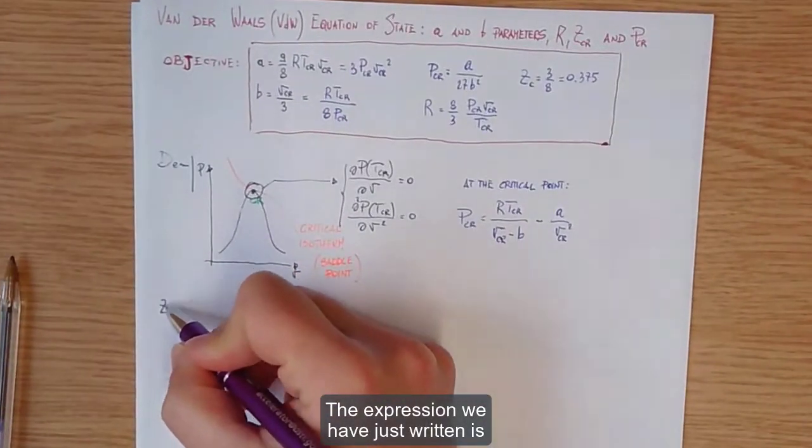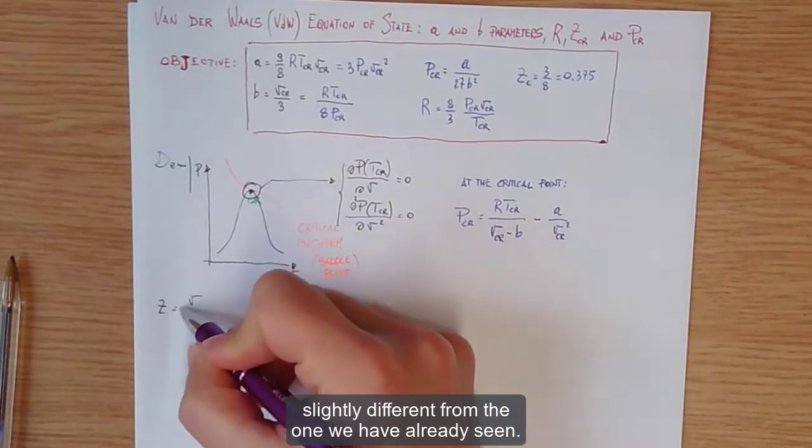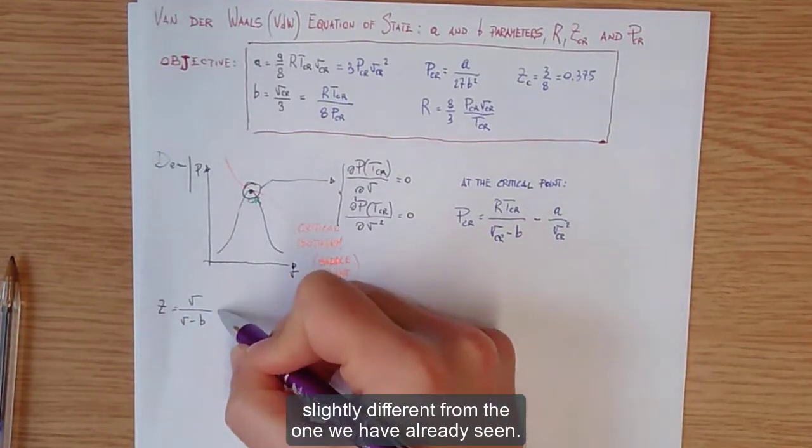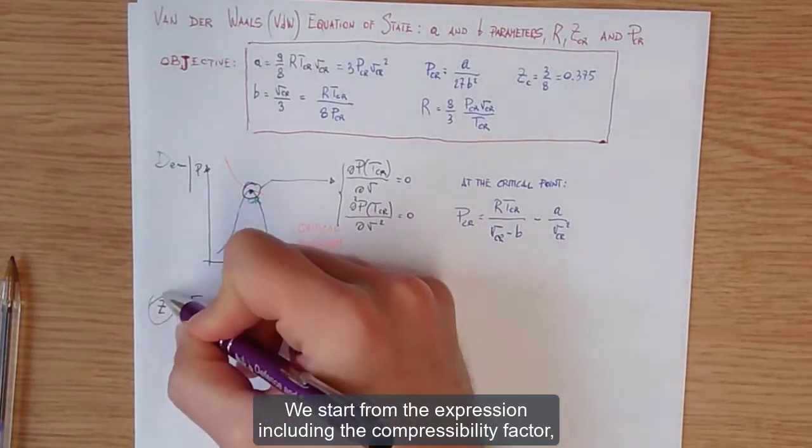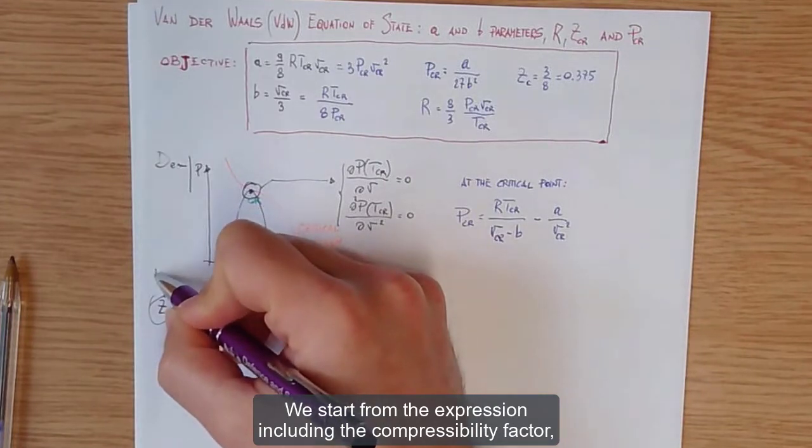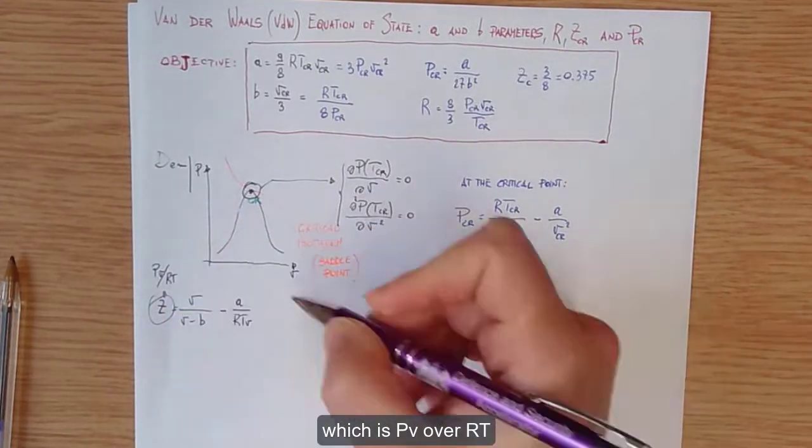The expression we have just written is slightly different from the one we have already seen. Let's see how the two expressions are equivalent. We start from the expression including the compressibility factor which is pv over RT.